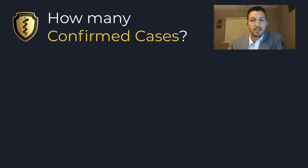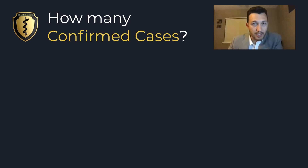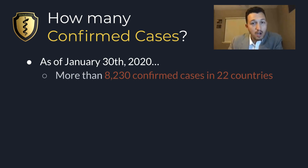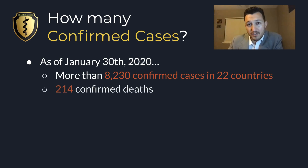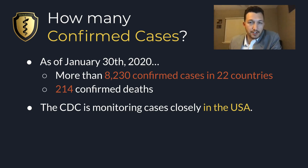So how many confirmed cases are we talking about? The number is going up each day, but officials and international organizations are trying hard to contain the outbreak. As of January 30th, 2020, more than 8,230 confirmed cases in 22 countries exist, including China, India, Australia, the United States, the Philippines, and many other nations. Also as of January 30th, 2020, 214 individuals have passed away from this infection. The CDC here in the United States is monitoring cases in conjunction with the WHO and several other international organizations.